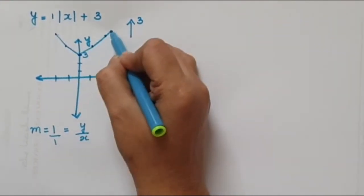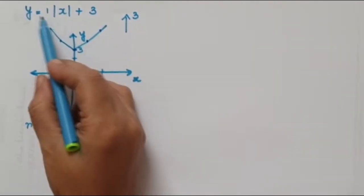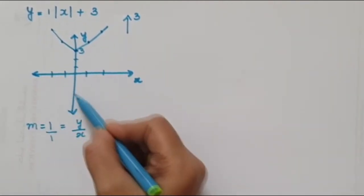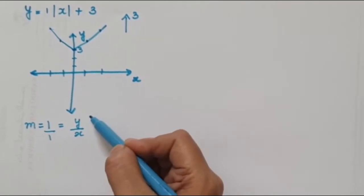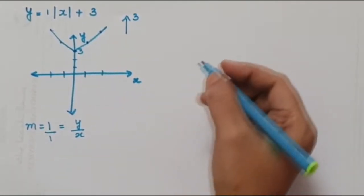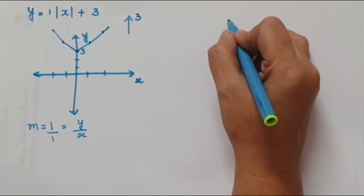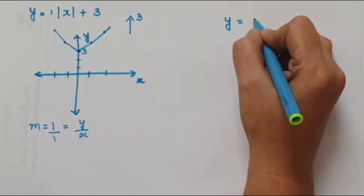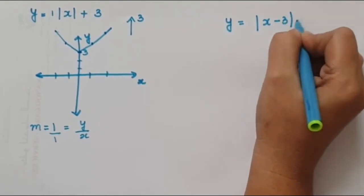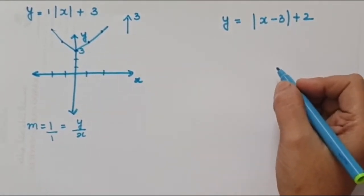This will be the shape of our graph. If there is a negative sign in front, we just draw it in reverse on the negative y-axis side. Now suppose we have the graph y = |x - 3| + 2. This means the function has x - 3 inside and +2 outside.